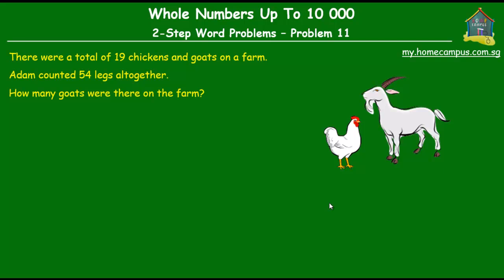The question is: there were a total of 19 chickens and goats on a farm. Adam counted 54 legs altogether. How many goats were there on the farm?